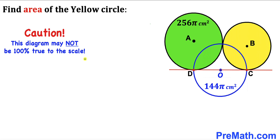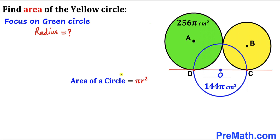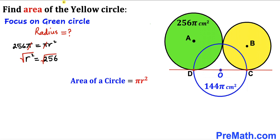Please keep in mind that this figure may not be 100% true to scale. Let's get started. Let's focus on the green circle and calculate its radius. Recalling the area formula: Area = πr². In our case, the area is 256π, so 256π = πr². Pi cancels, giving r² = 256. Taking the square root of both sides, the radius of the green circle is R = 16 cm.